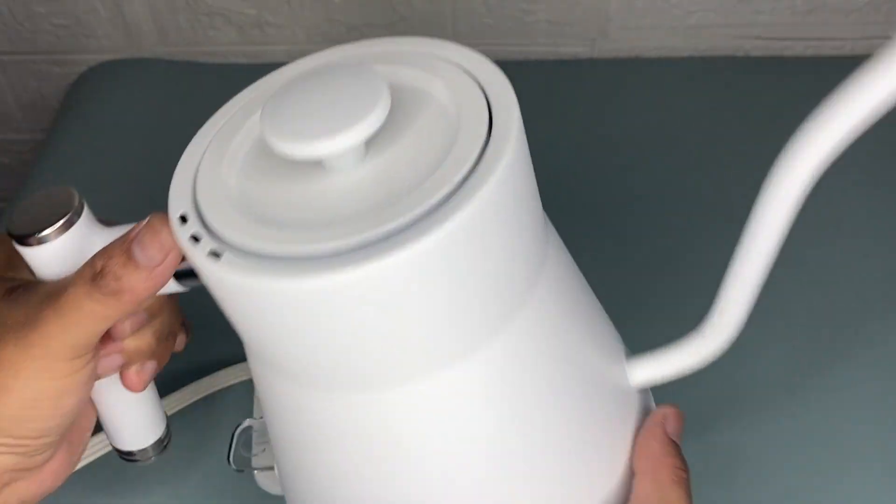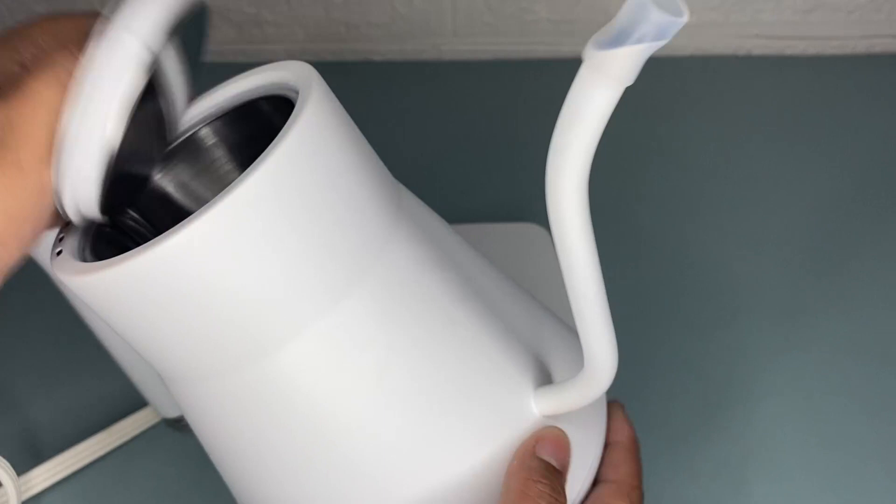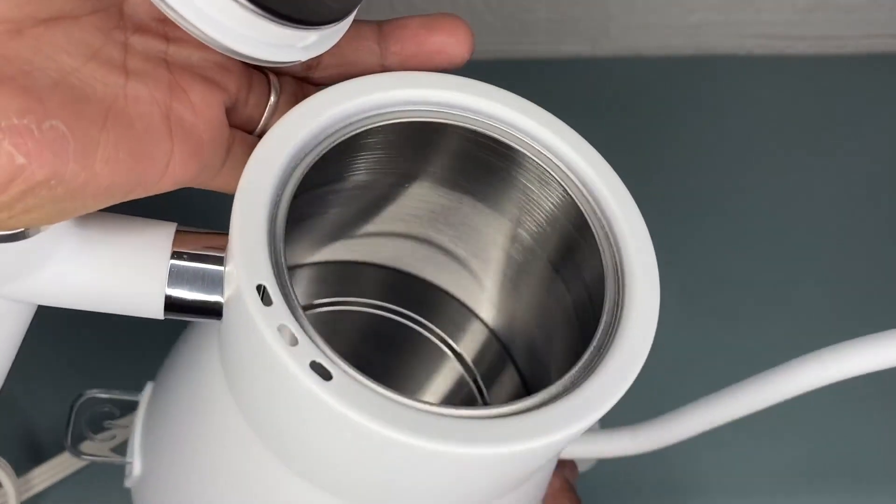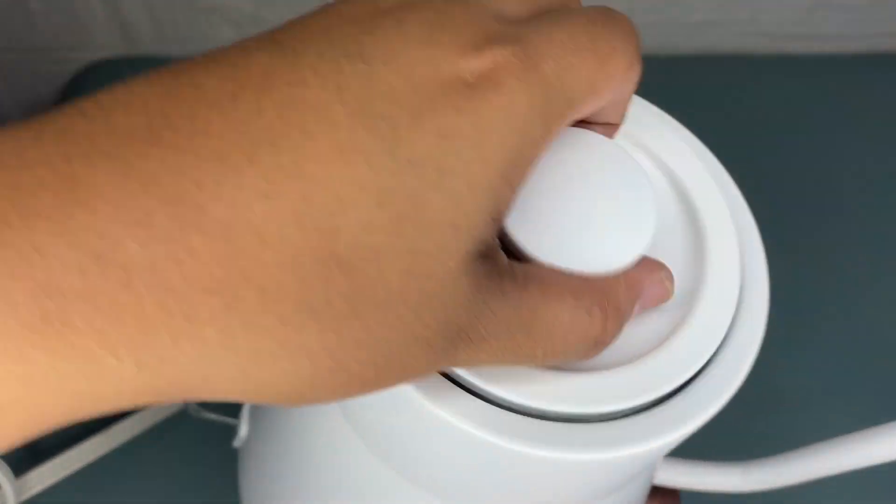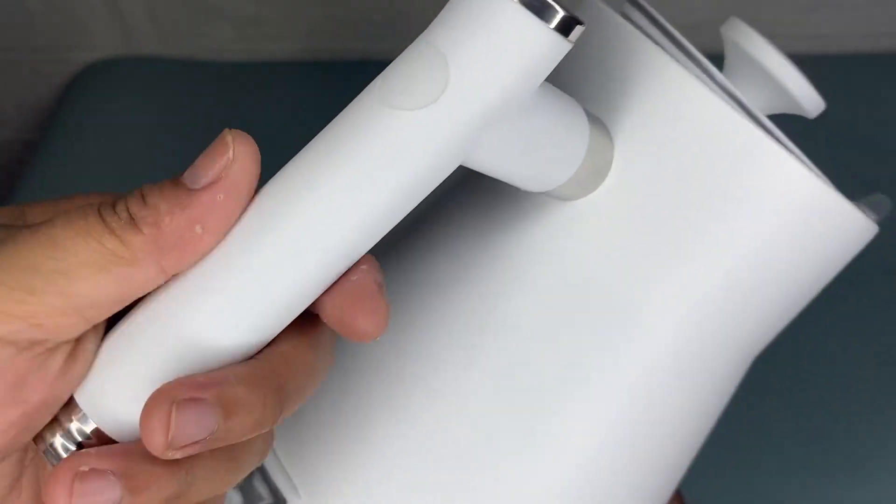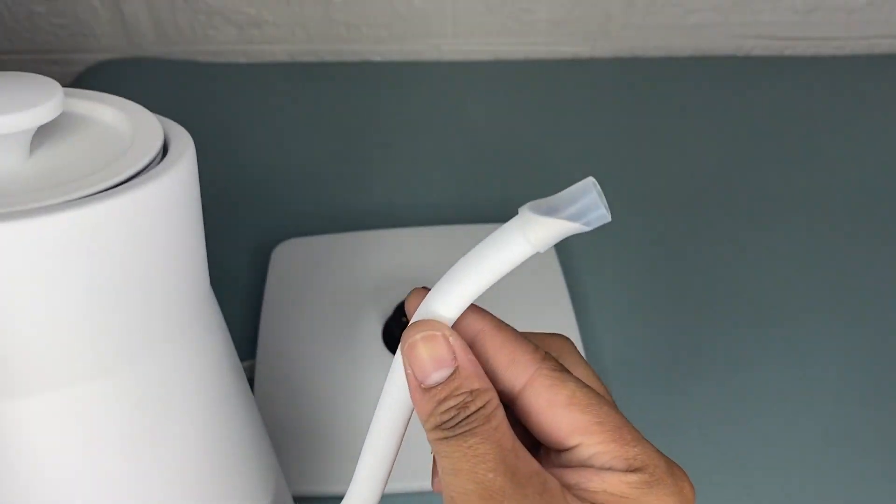This kettle has a 0.8 liters capacity and it has an ergonomic handle. The Gooseneck Kettle adapts an arc-shaped spout.